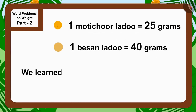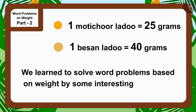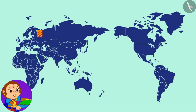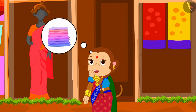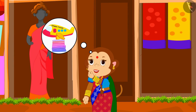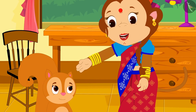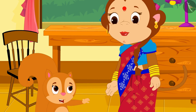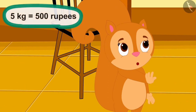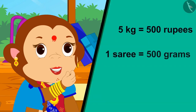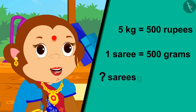In the previous video, we learned to solve word problems based on weight. In this video, we will see some more interesting examples. Banu's designer sarees have become famous worldwide. Banno is thinking of sending her sarees abroad through Chapu Travels. For a 5 kg parcel, you have to pay 500 rupees. One of Banno's sarees weighs 500 grams — so how many sarees can she send in a 5 kg parcel?